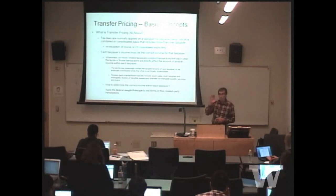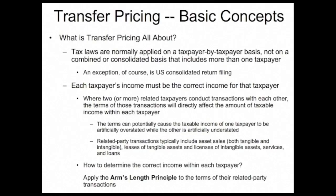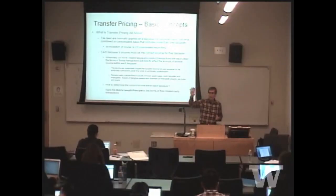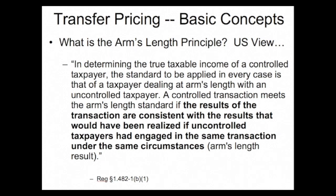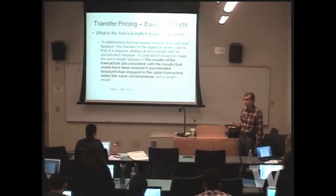In summary, it's very important to realize that within a group, if you've overstated one, you're understating somebody else. The principle expression, the arm's length principle, that's how we decide what is the proper amount of income in each of the controlled entities when they have transactions between themselves. The heart of this is, if the results of the transaction are consistent with the results that would have been realized if uncontrolled taxpayers had engaged in the same transaction under the same circumstances. This is your arm's length standard.